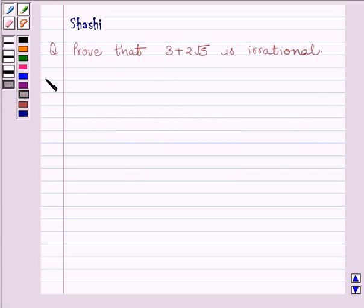Let us now start with the solution. First of all, let us assume that 3 plus 2 root 5 is rational.